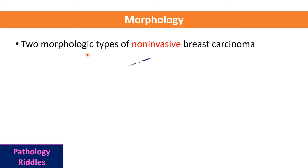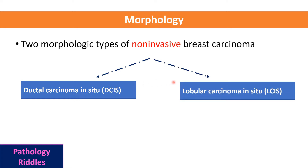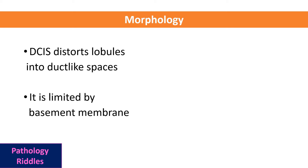Four percent of breast carcinomas will be bilateral. There are two morphologic types of non-invasive breast carcinoma: one is called ductal carcinoma in situ or DCIS, while the other is called lobular carcinoma in situ or LCIS. Irrespective of their name, both arise from terminal ducts.